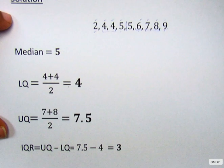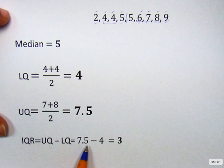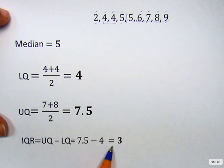Then our interquartile range will be upper quartile minus low quartile, which is 7.5 minus four, and the answer is three. Thank you.